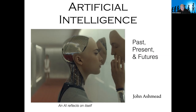Welcome to Balticon and to this talk on artificial intelligence — its past, present, and possible futures. My name is John Ashmead. I'm a programmer by day; I write and publish papers on physics and quantum mechanics. I'd like to give you some background on where artificial intelligence is today, what we mean by it, and what its possible future is likely to be. By the end of this talk you'll have at least a basic understanding of the role of AI in our society, and I'll give you some references on where to go next.